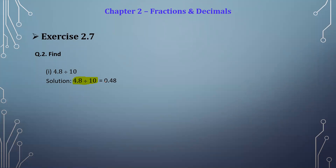For 4.8 ÷ 10, the decimal point is present between 4 and 8. We shift it to the left by one digit because 10 has one zero. After shifting, no digit is present before 4, so we place a zero there. Therefore, 4.8 divided by 10 equals 0.48.